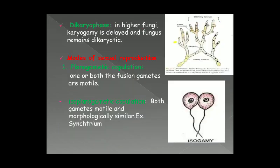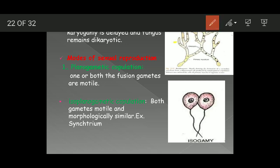In higher fungi, karyogamy is delayed and the fungus remains dikaryotic for some period of time. Here you can see two different mycelia — primary mycelia — each cell containing one nucleus. The hyphae of these two different primary mycelia mix up, resulting in the formation of a dikaryotic cell. This dikaryotic cell divides further, forming a dikaryotic mycelium where each individual cell contains two different nuclei. This phase in the life cycle of fungi is known as the dikaryotic phase.